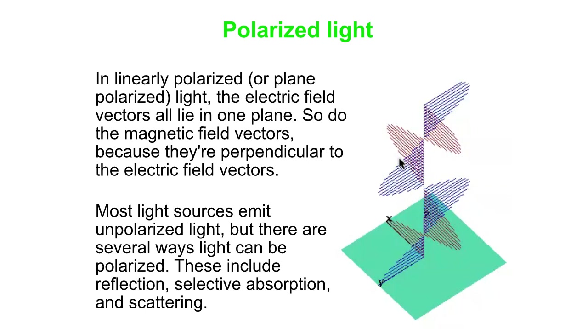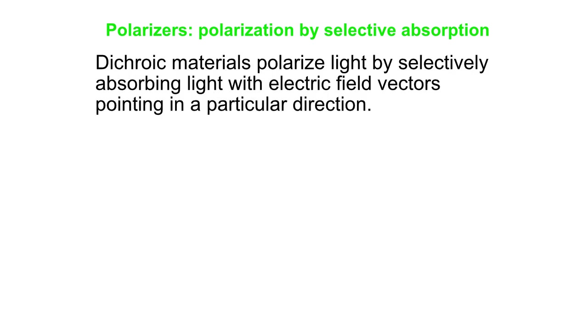For instance, you can do it by reflection. You can do it by selective absorption — you can absorb electric field vectors one way but not the other way. And you can do it also by scattering, and that's how it's done in the atmosphere. We will focus on polarization by selective absorption, and that's what a piece of Polaroid film is all about.